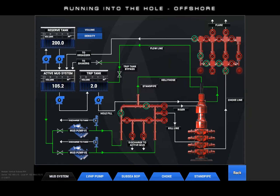When flow checking the well, we must be diverted to the trip tank to ensure small amounts of flow or volume gain will be registered. Now let's jump to the PVT.